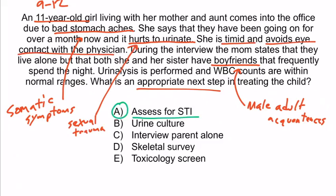The appropriate next step is A — assess for an STI. B is incorrect because the urinalysis was already performed, making UTIs unlikely, so a urine culture wouldn't be informative. C is incorrect because interviewing the parent alone isn't standard in cases of suspected abuse; however, interviewing the child alone may be appropriate since abused children often won't disclose abuse with the parent present. D is incorrect because a skeletal survey is only indicated for suspected physical abuse to scan bones for fractures, and there are no red flags for physical abuse here. E is wrong because there are no signs of drug use or poisoning. That concludes this section.